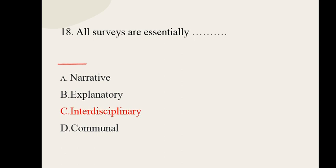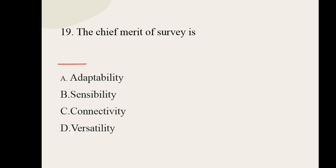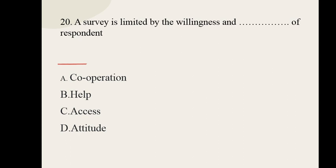Question number nineteen: the chief merit of survey is dash. Options: adaptability, sensibility, connectivity, versatility. The correct option is versatility. Question number twenty: a survey is limited by the willingness and dash of the respondent. Options: cooperation, help, access, attitude. The correct option is cooperation.